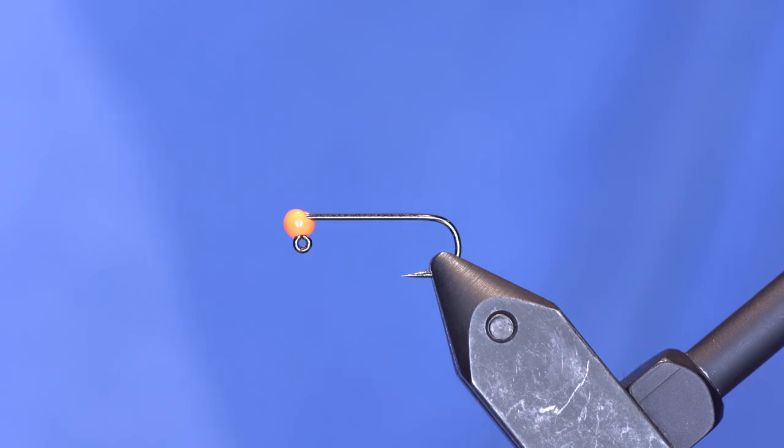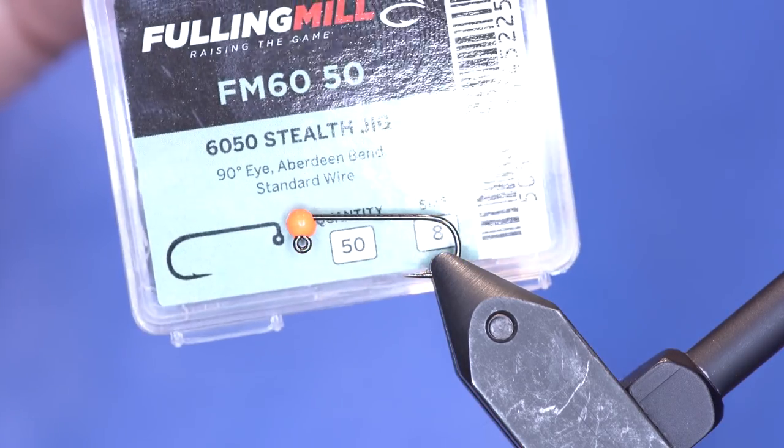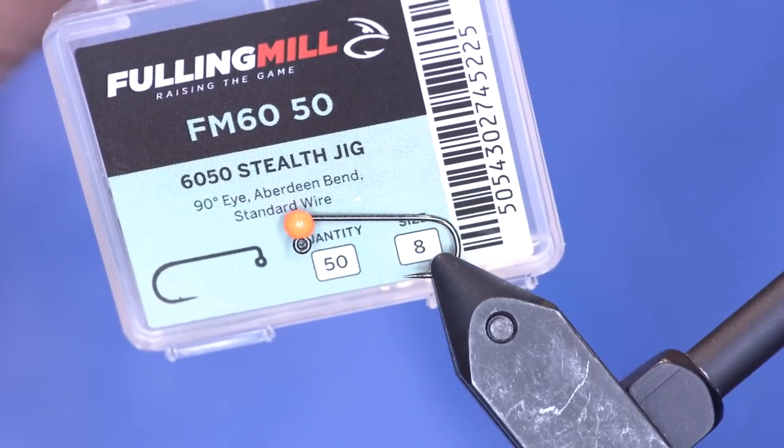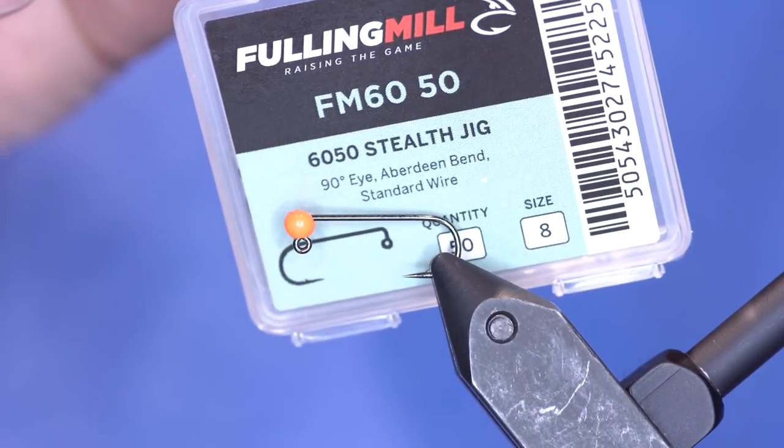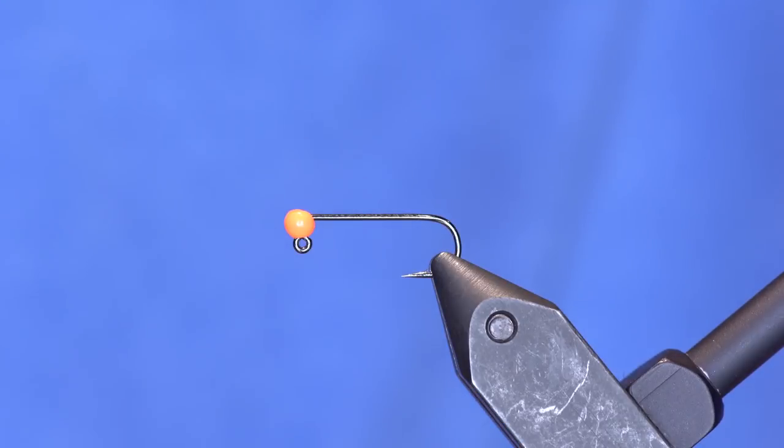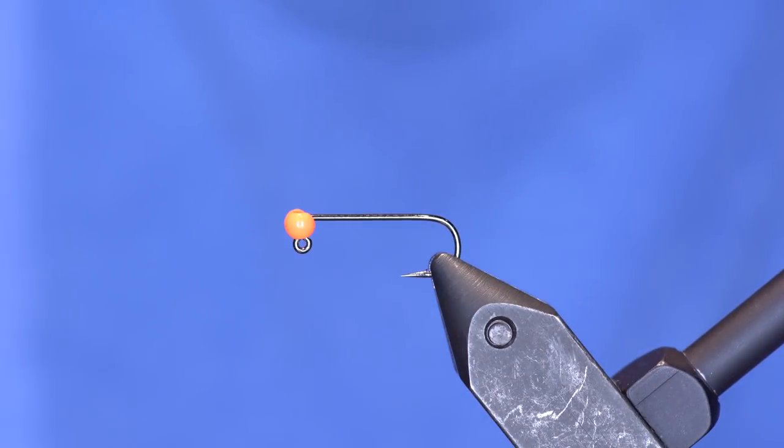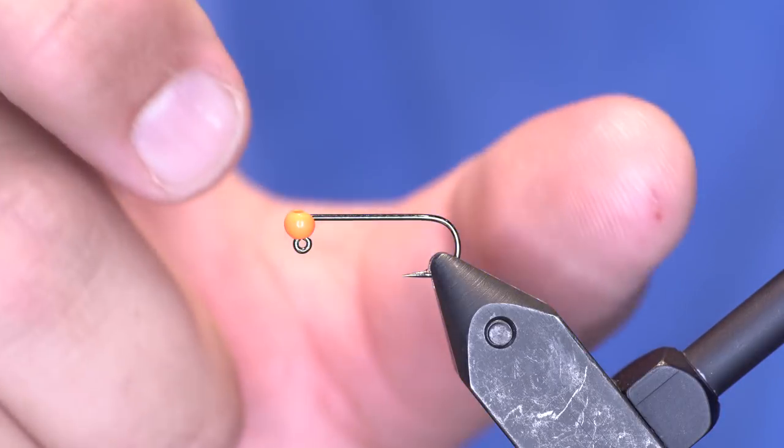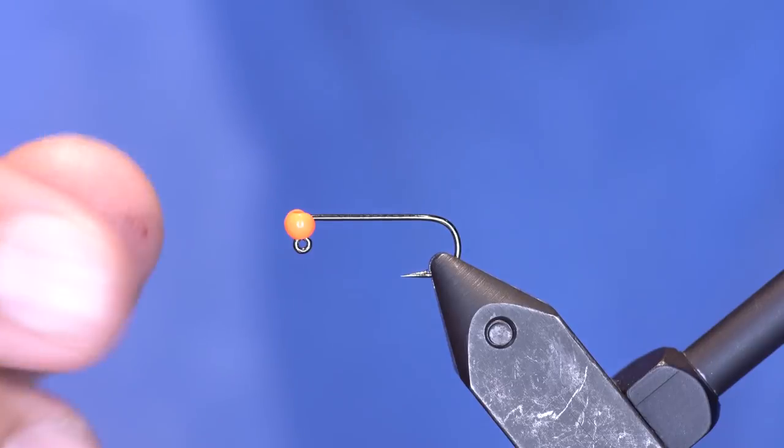I've got the new Fulling Mill Stealth jig hook. It's a 2x long hook, 90-degree bend. This is awesome for balanced flies or things like this. Really digging this hook. This is a size 8. I typically fish 10s for bluegill, but because it's a little bit longer shank, they'll be able to get that in their mouth. You can pop it out a little bit easier.